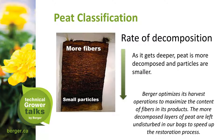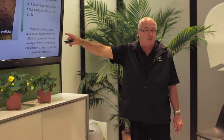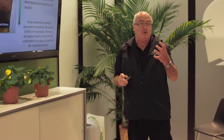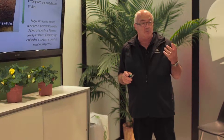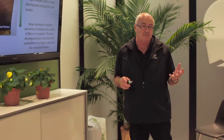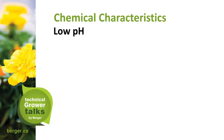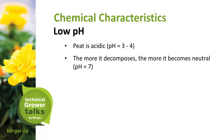Berger optimizes its harvest to maximize fiber content in its product. That said, we may use some smaller particles for mixes where we want to retain more water — smaller particles have more humic acid, are stickier, and retain more water. So it'll be a blend. The low pH of peat ranges from three to four; the more it decomposes, the more the pH rises toward neutral.